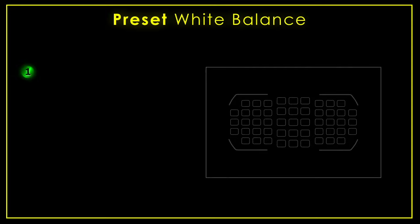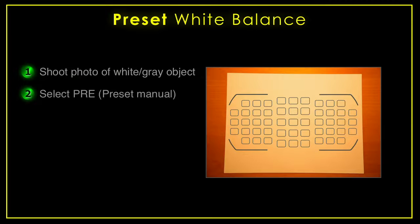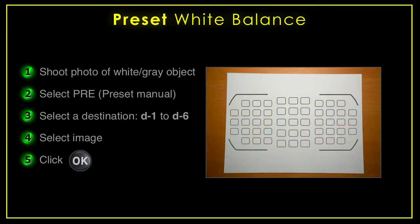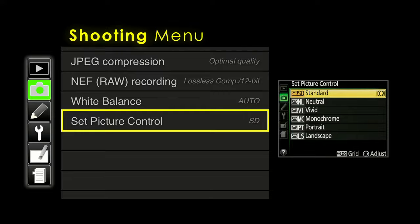One of the settings in here is preset white balance. This is where you don't know what color the light source is, so you photograph a white or gray (neutral-colored) object. As you can see, it appears very orange or yellowish. You shoot a photograph of the white paper, select preset manual (known as PRE), select a destination — there are six presets you can save and even name. The camera looks at that image and corrects the color for that light source. If you work under up to six unusual light sources regularly, you can save those as preset white balances.